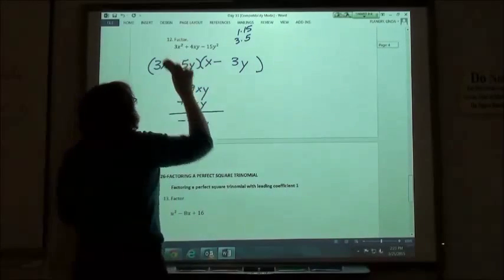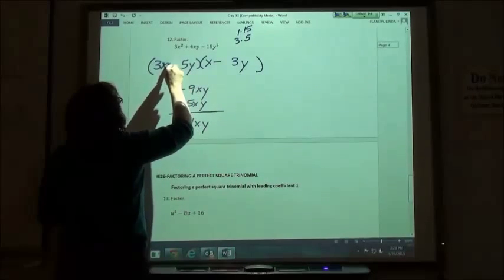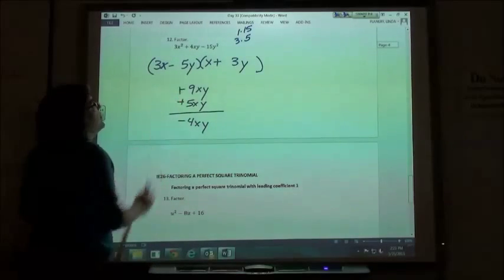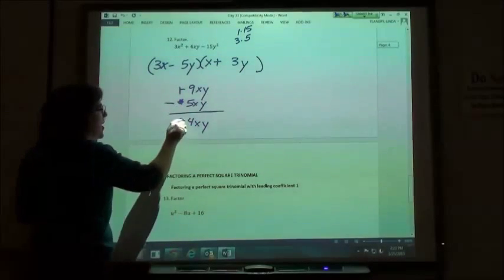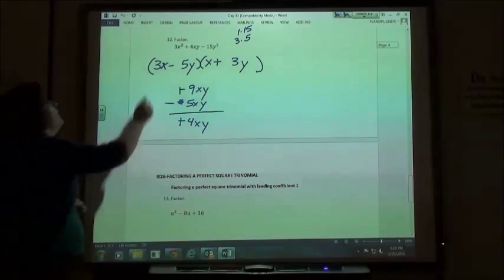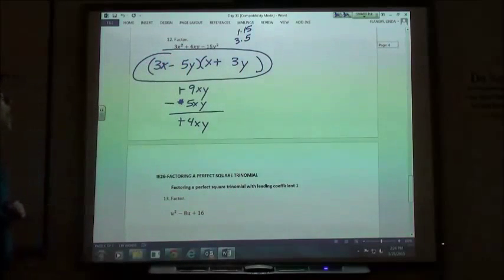So I'm going to make the first one negative and the second one positive. Now I'm going to get a positive 9xy and a negative 5xy which gives me the positive 4xy in the middle. So 3x minus 5y and x plus 3y.